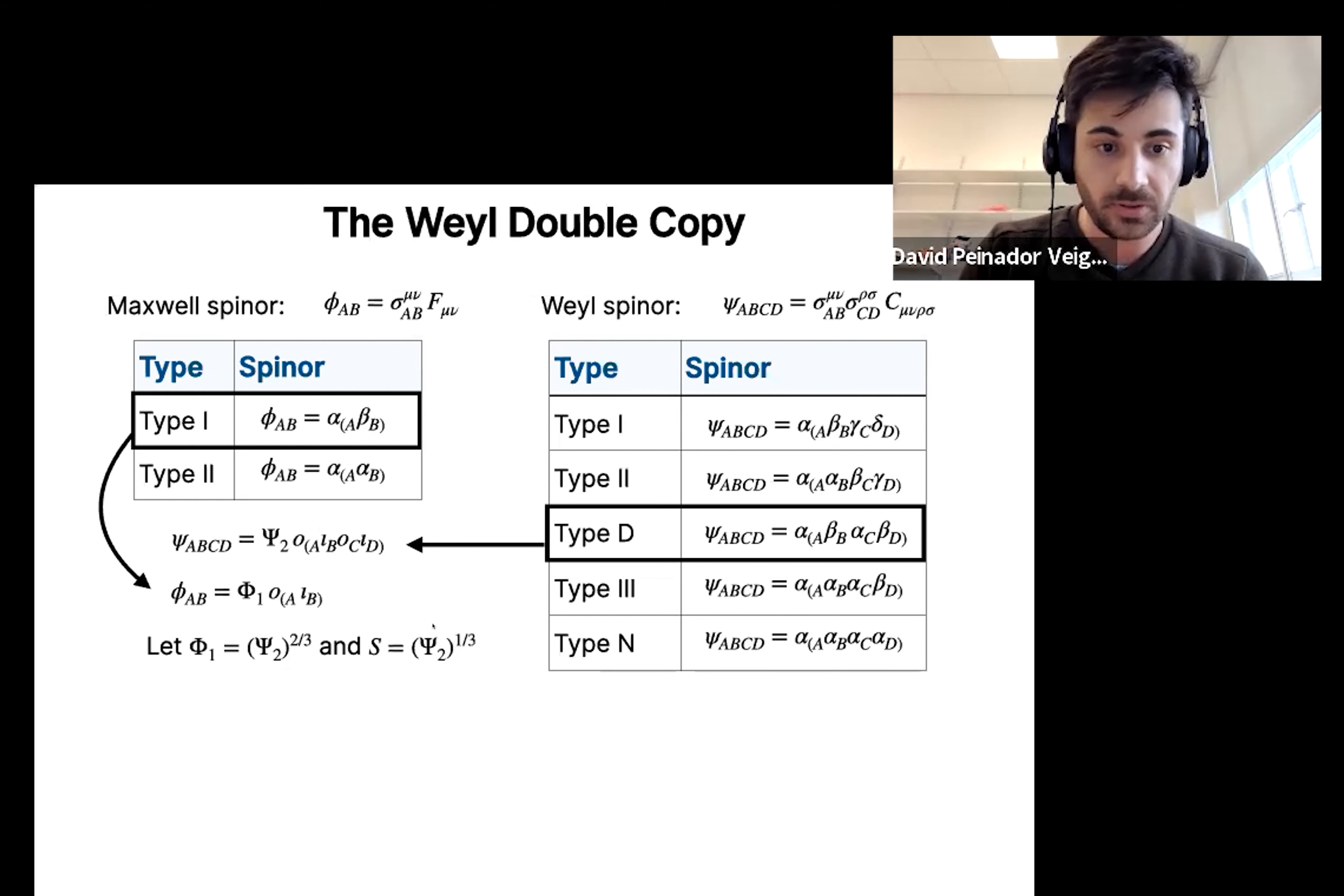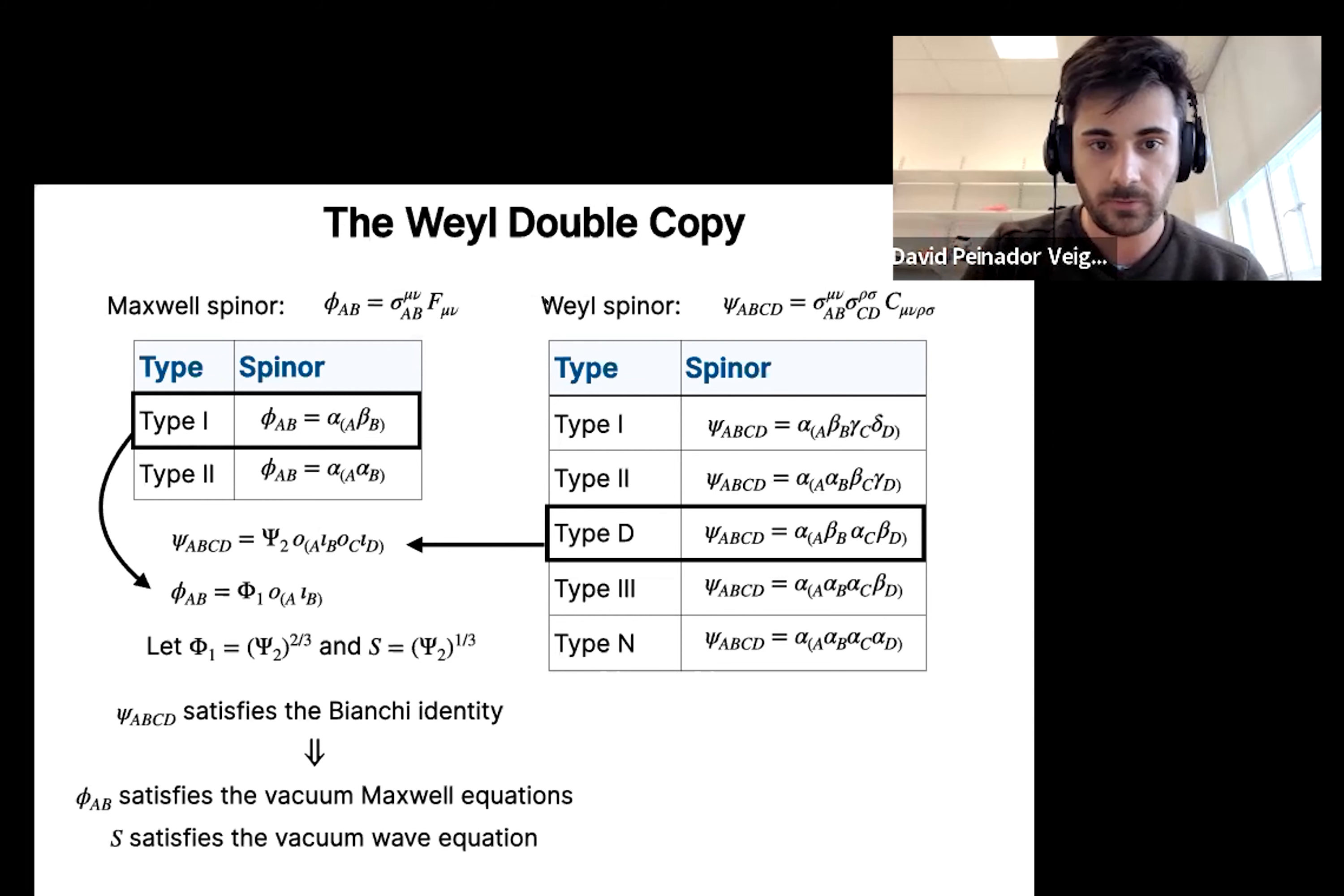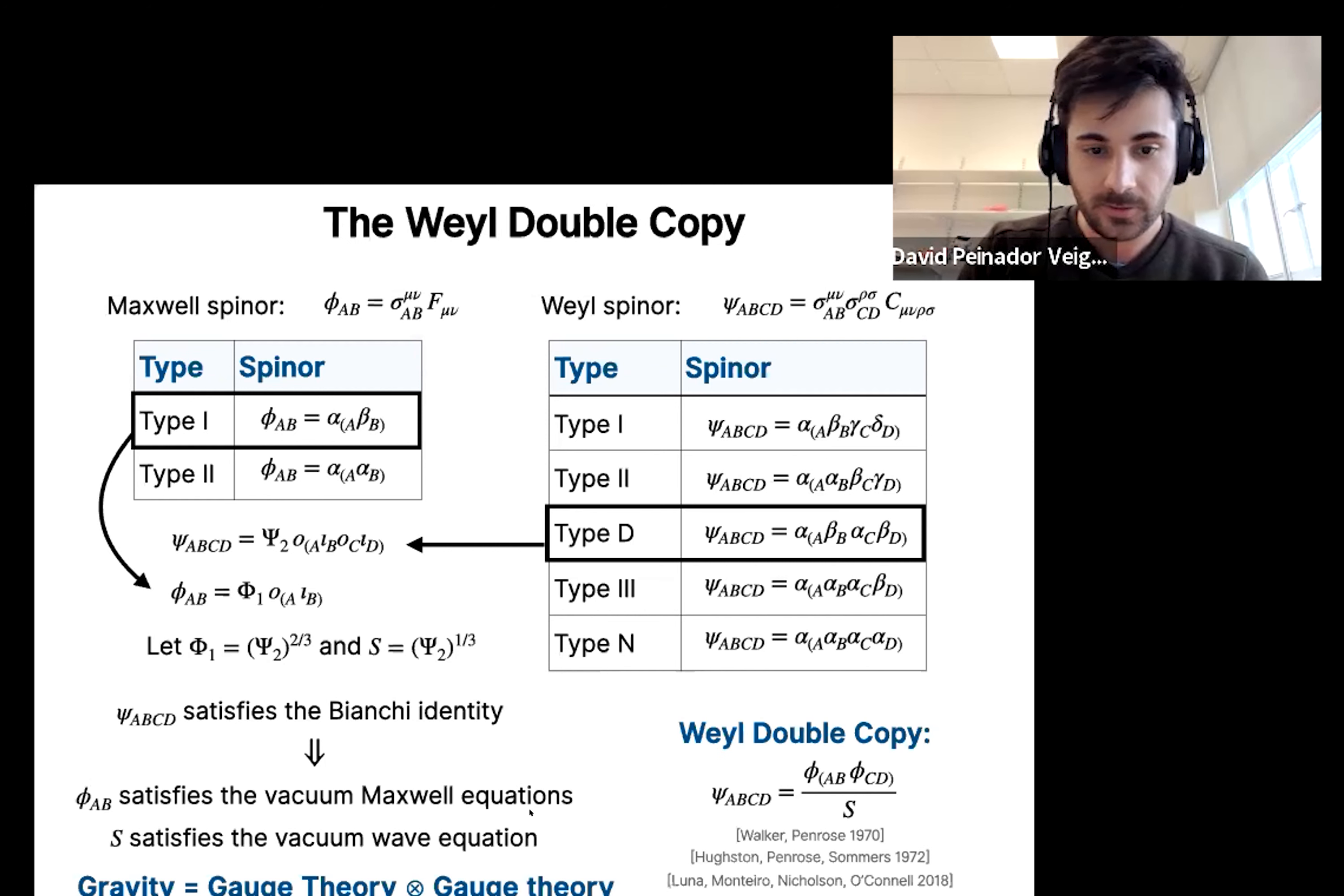then something remarkable happens. If ψ satisfies the Bianchi identity, which is the equation of motion of the Weyl spinor, then automatically φ and s satisfy the Maxwell equation of motion and the vacuum wave equation. So here we are again rendering the relation of gravity as the square of gauge theory. And these relations are written such that you can write the Weyl spinor as φ φ over s, which is very reminiscent of the double copy relation that we discussed in the previous slide.